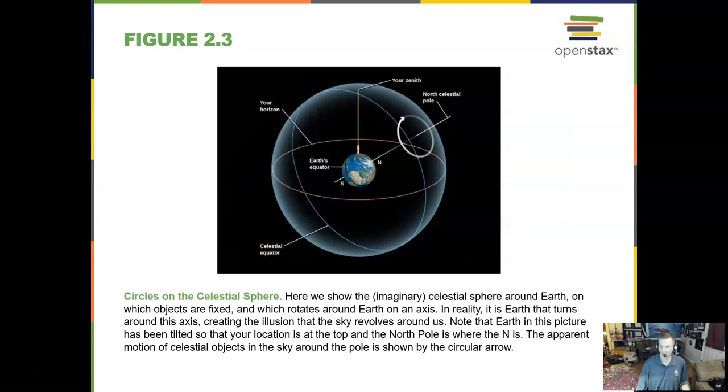Now, just like on the earth we have a north and south pole and an equator, we have the same thing in the sky. So we have the north celestial pole, which is a point straight out from the north pole on the earth hitting that imaginary celestial sphere. And we also have the celestial equator, which is a line from the earth's equator to that imaginary sphere in the sky.